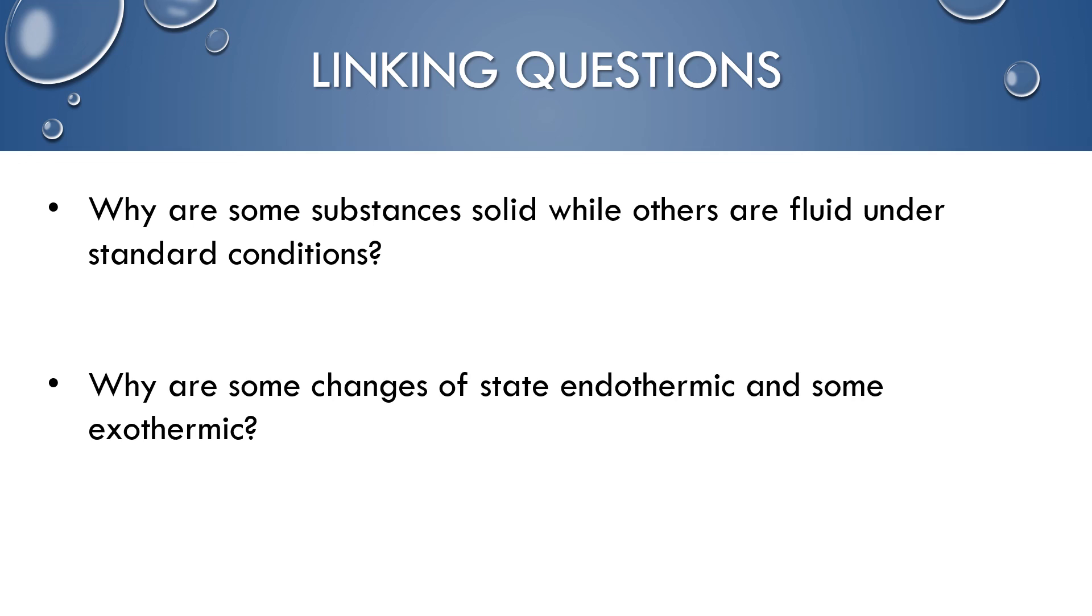Okay, so here are some of the linking questions that if you have taken a prior chemistry course you should start to think about. The first one is why are some substances solid while others are fluid? So, look at gases under standard conditions. Like, why is silver metal a solid at room temperature while carbon dioxide is a gas at room temperature? So, think about the reasons why and give a proposed answer. And then why are some changes of state endothermic and some changes of state exothermic? I talked about this a little bit earlier but think about why those changes of state are endothermic and some are exothermic.